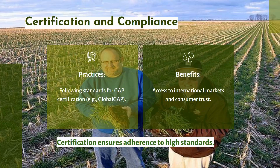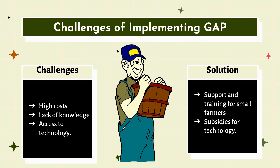As we all know, challenges of implementing GAP are worldwide. First is lack of knowledge and access to technology. Local farmers and small-scale farmers have less access to technology, and lack of awareness is really challenging for implementing GAP. Also, high cost is a challenge. We have to train and support small farmers so that they can have access to technology and learn to implement GAP and have a profitable business. These challenges have solutions that we need to implement in order to maintain and implement GAP worldwide.